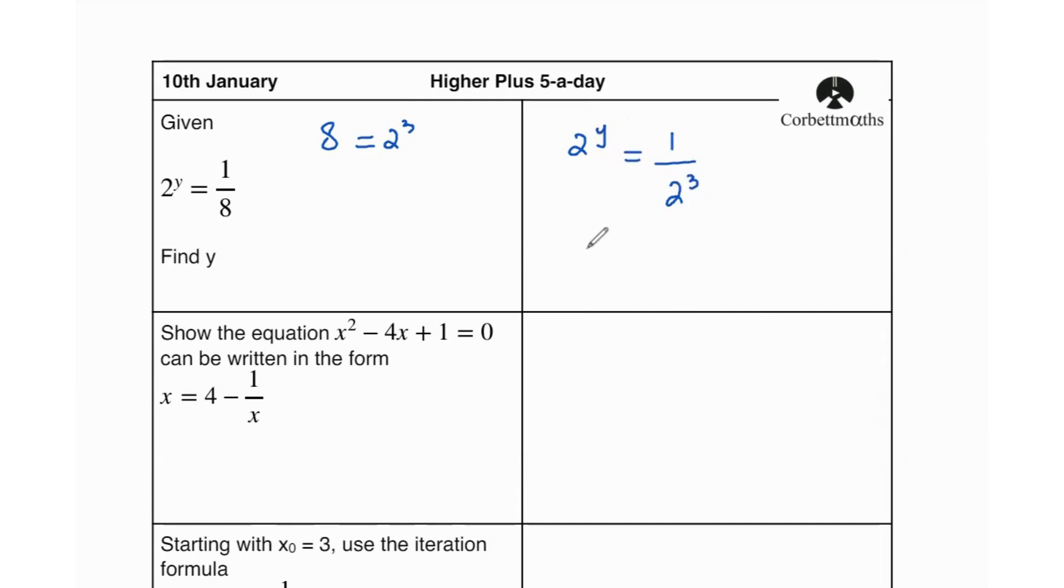So when I do that, it becomes 2 to the power of negative 3. Whenever we move a term from the numerator to the denominator or vice versa, the sign of the power changes. If it's positive it becomes negative, and if it's negative it becomes positive. So now we have 2 to the power of y equals 2 to the power of negative 3.